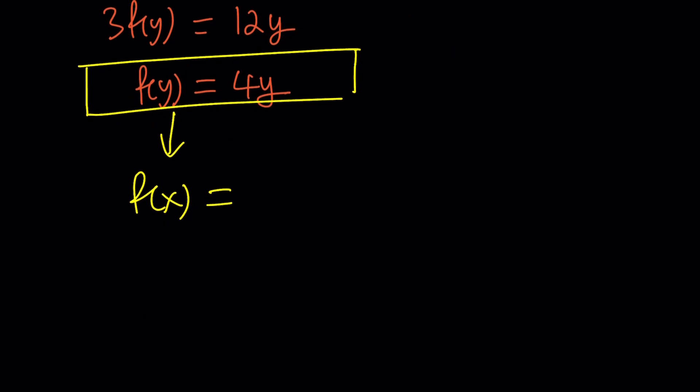That just kind of changes the domain, but of course, oops, I just wrote y again. And this is going to give us, basically, f(x) = 4x. But, yes, you can do it. You can replace a variable with another one as long as you do it on both sides. Make sense?